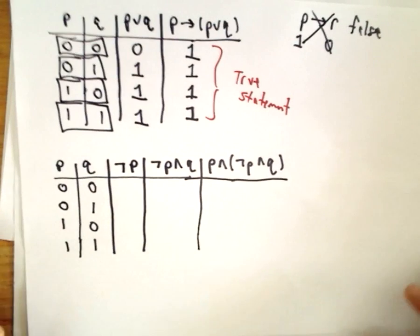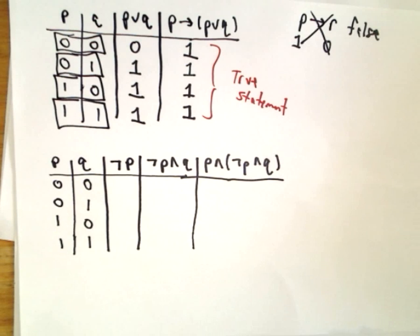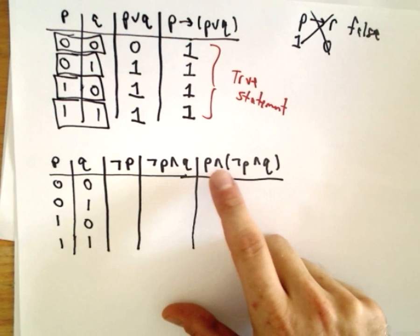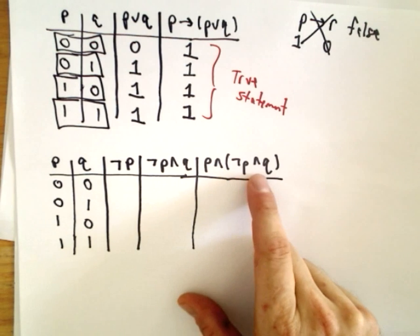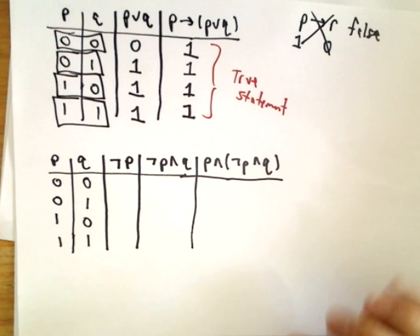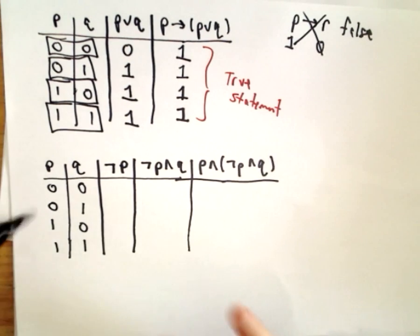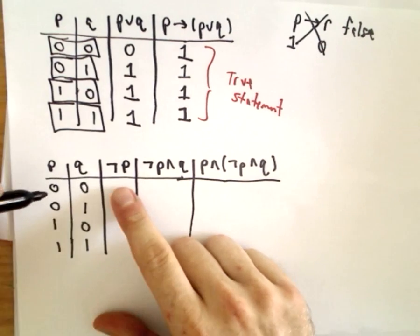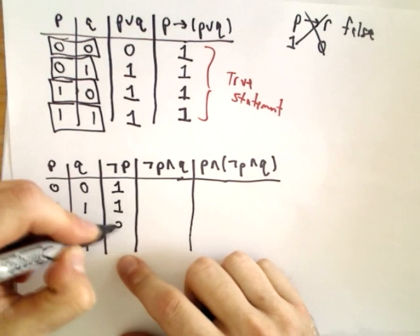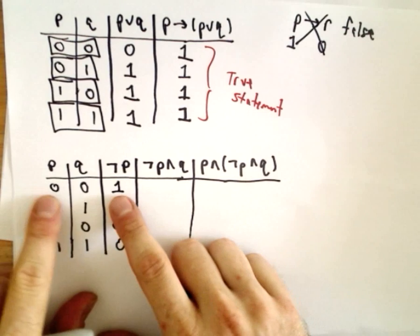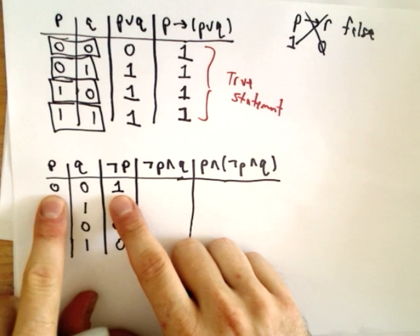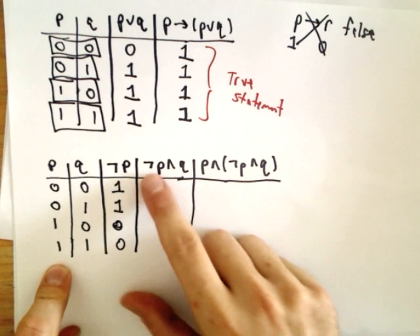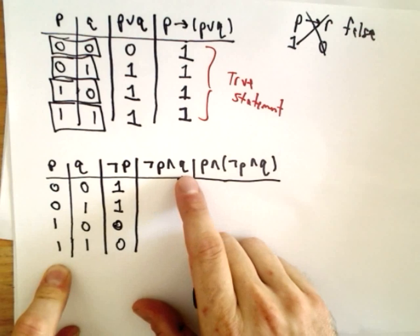Let's look at the bottom one here. Maybe you can guess what's going to happen — you can probably almost reason what should happen. Is it possible for P and (not P and Q) to be true? Well, probably not, but let's see. We've got our different truth values for P and Q. Not P will just take the opposite truth value: one, one, zero, zero — we're just taking the opposite, so instead of zero it'll be one, and instead of one it'll be zero.